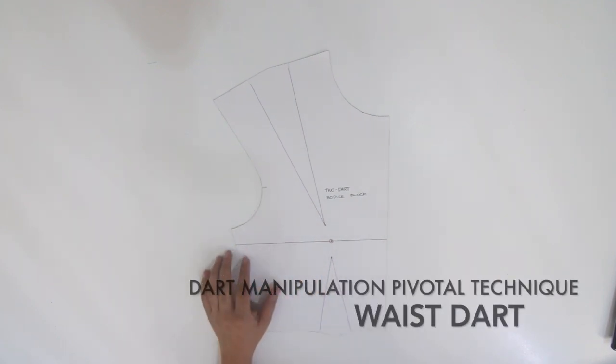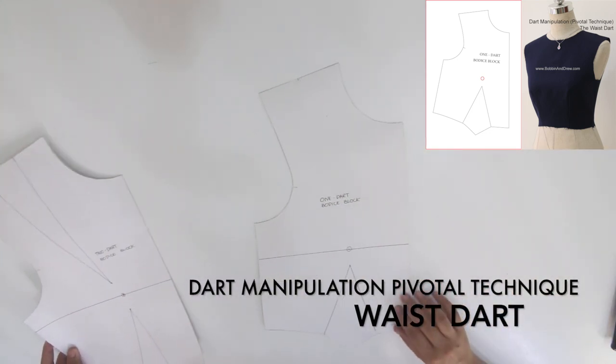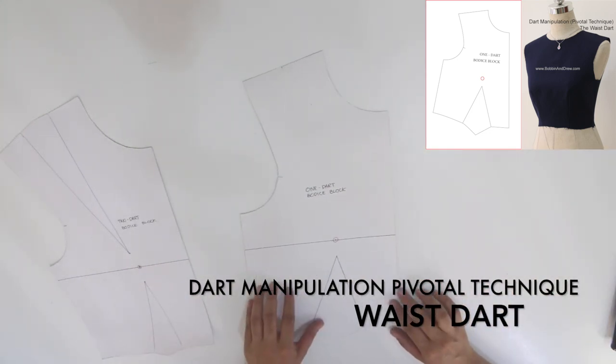This is a quick video on how to manipulate a two dart bodice block into a waist dart using the pivotal technique.